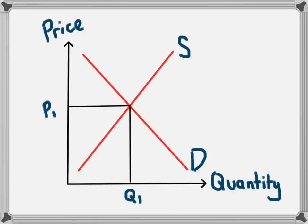If the price was lower than P1. So now we're going to make our price P2 lower than P1.